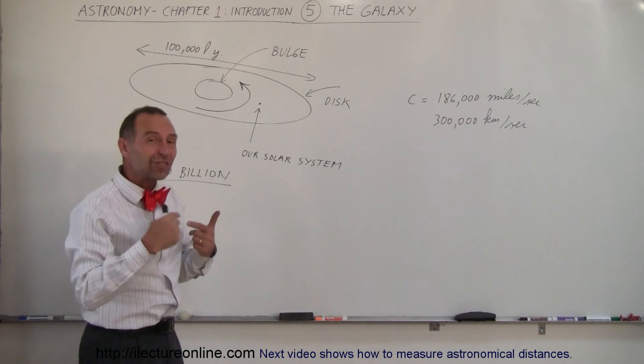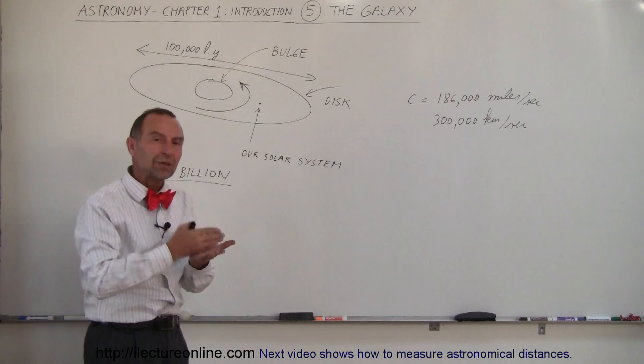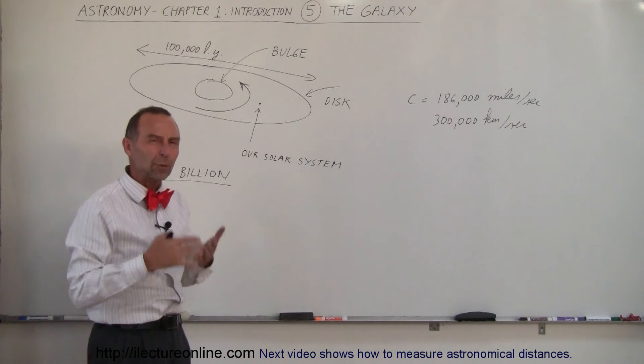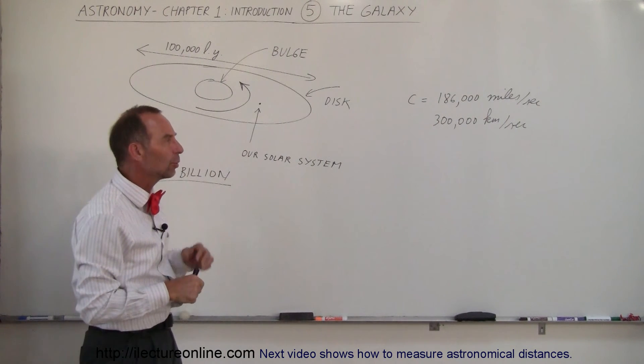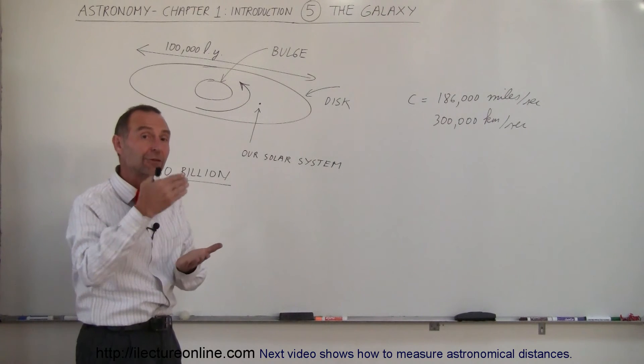Then it would go around the Earth seven and a half times in a single second, or the distance from here to the Moon in just over a second, about one and a third second would be the time required for light to travel from the Earth to the Moon.